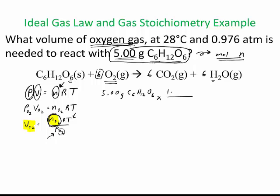So first we'll use the molar mass. 1 mole of glucose, C6H12O6, is 180.2 grams, and there are 6 moles of O2 that react for every 1 mole of glucose, so we'll write 6 moles of O2 over 1 mole of glucose.